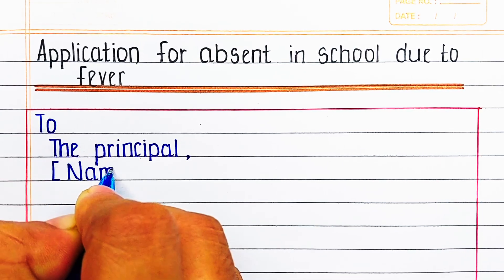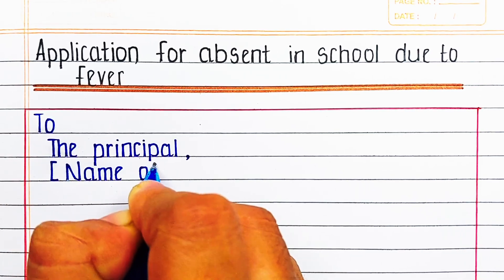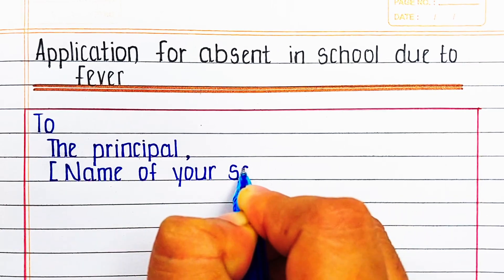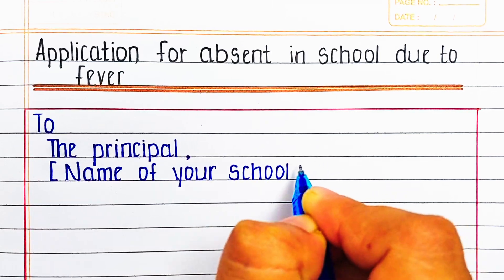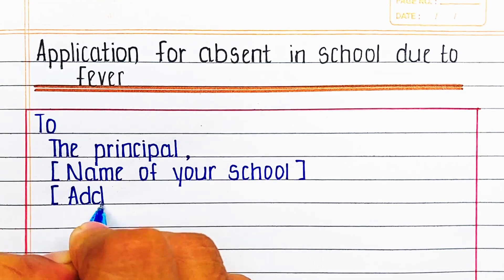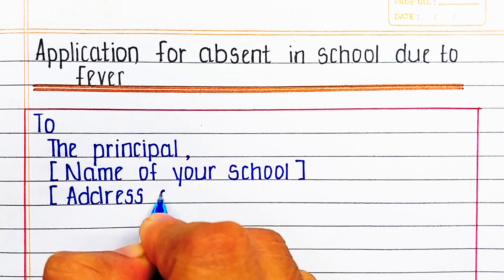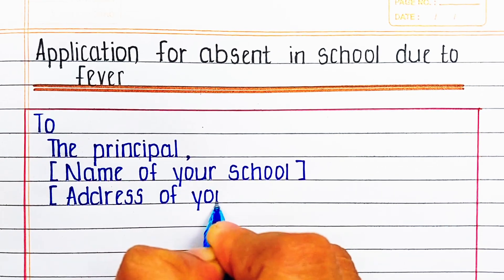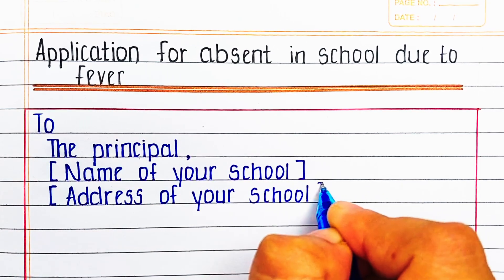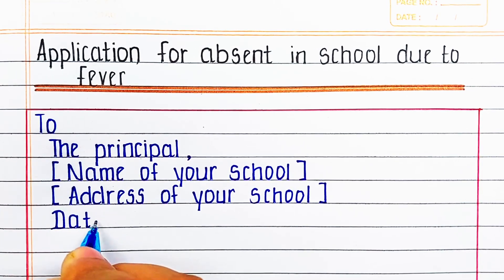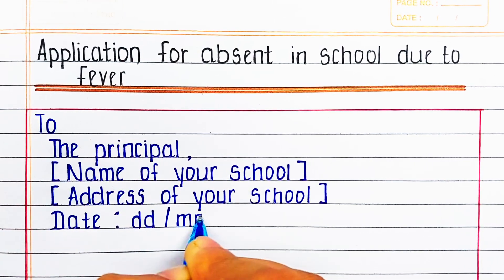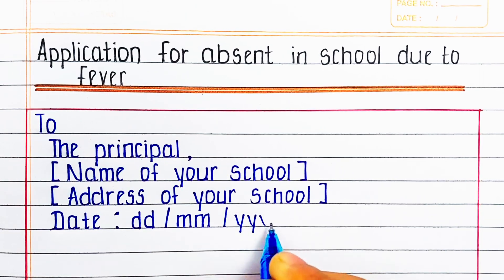Write 'To the Principal', then in the next line write the name of your school. In the next line write the address of your school.